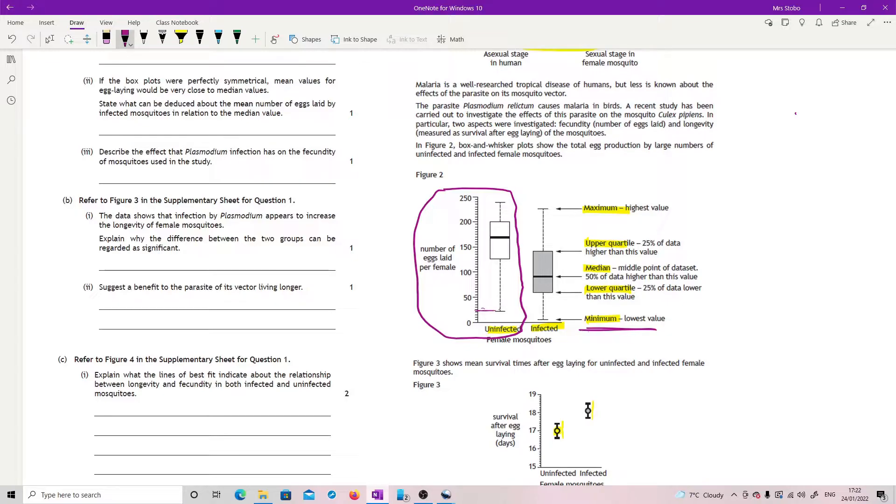I think the simplest one to read off is your range data, which is 240 and 20. So you can see that your maximum value is 240, minimum is 20. That I think is a nice point to make and worth the mark in the mark scheme.